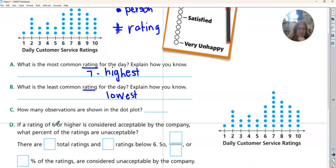Part D says, if a rating of six or higher is considered acceptable by the company, what percent of ratings are unacceptable? We know how many total ratings there are. We just found that out. There are 40 total ratings, so there are 40 people that gave a rating. And how many are below six? We want the unacceptable. This is acceptable, so this is unacceptable.